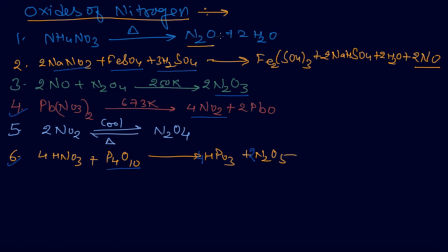Let me draw the structure of N2O. In N2O, the valence electrons: nitrogen has 5, so two nitrogens give 10, plus oxygen gives 6, totaling 16 electrons to distribute. Arrange them around N-N-O to satisfy the octet. Put two, four, and two, four, giving two, four, six, eight, ten, twelve, fourteen, sixteen electrons.